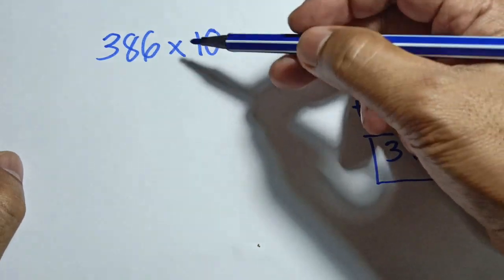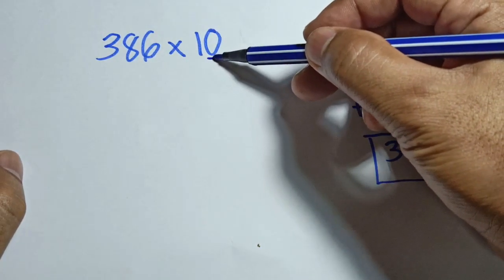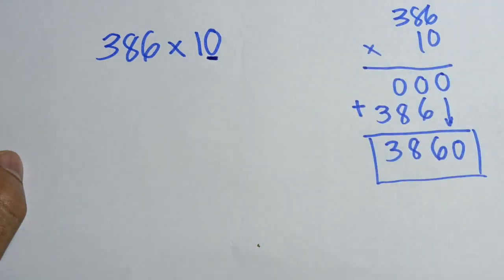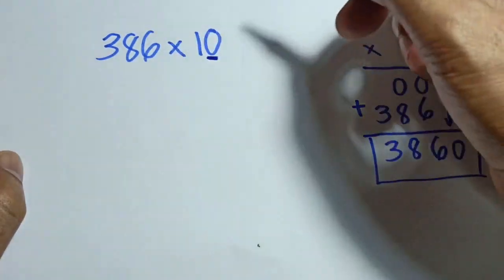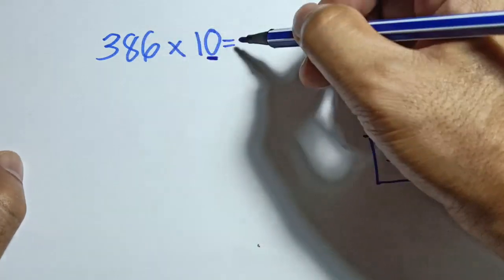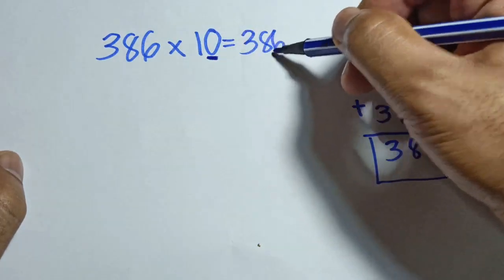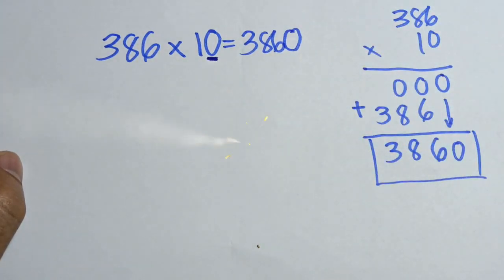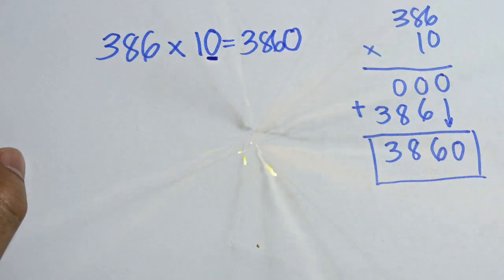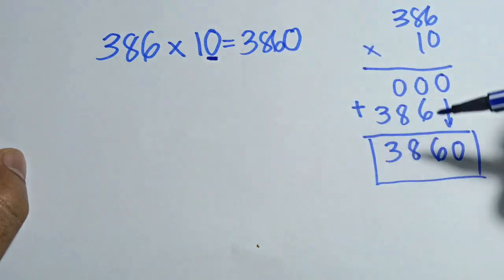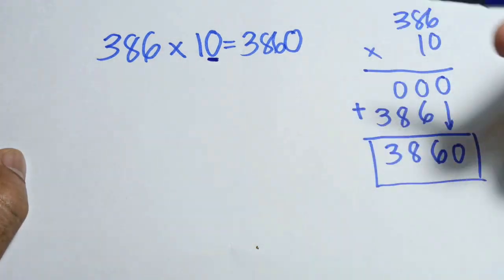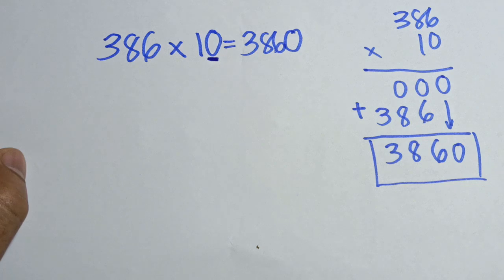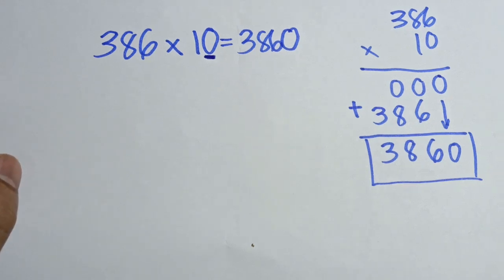The quickest way to multiply numbers by 10, 100, or 1000: for 386 times 10, in 10 there is one zero. So all you have to do is copy the number — 386 — and then add one zero beside the last digit. The answer is 3860, which is the same as the traditional way.